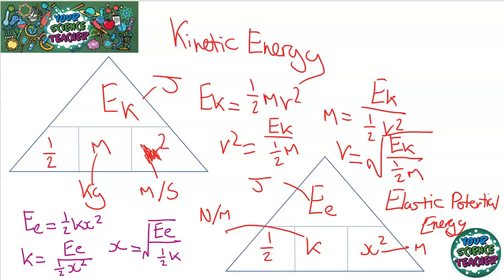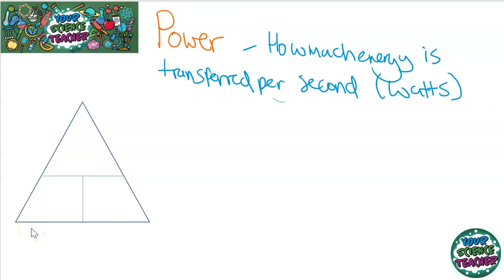The power of an appliance is how much energy it transfers per second. And this is measured in the unit of watts. From its description, you should have some good idea of how the calculation triangle will look. The amount of energy transferred per second, so that's going to be time on the bottom, energy transferred divided by time will give me the power.